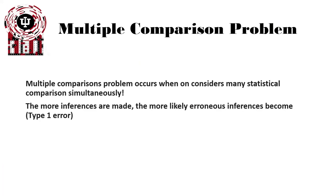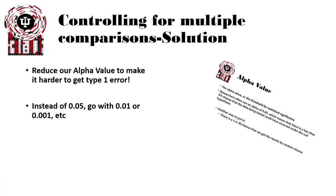So what that really means is multiple comparisons are a problem. They occur when we consider many statistical comparisons at the same time. The more inferences we make, the more likely we have an erroneous inference, which is a type 1 error.